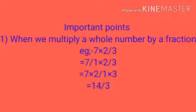Important point one: when we multiply a whole number by a fraction. Example: 7 into 2/3. Here 7 is a whole number and 2/3 is a fraction. We can write 7 as 7/1, so 7/1 into 2/3. Multiply directly: 7 into 2 divided by 1 into 3, which equals 14/3.